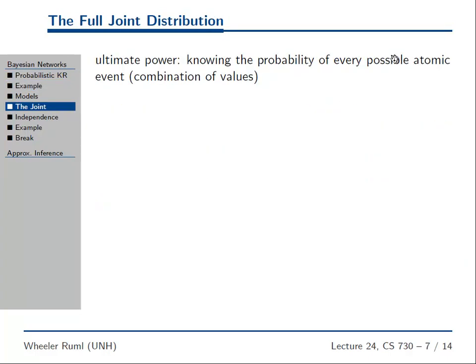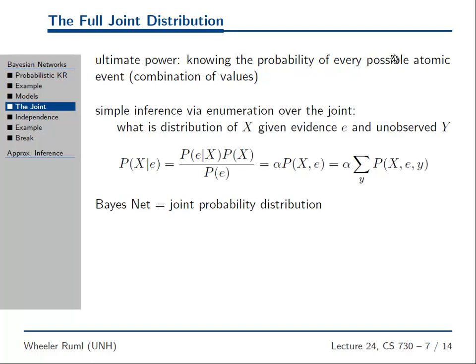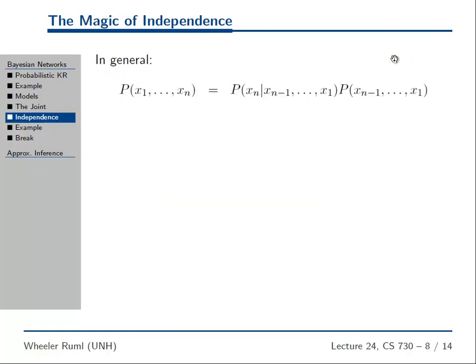So to know the probability of every single world, that's the fundamental thing that you need to know if you're going to answer a Bayes net query. So, okay, what's the probability of a world? Well, I already talked about the kinds of queries we can answer. What's the probability of a world, though?